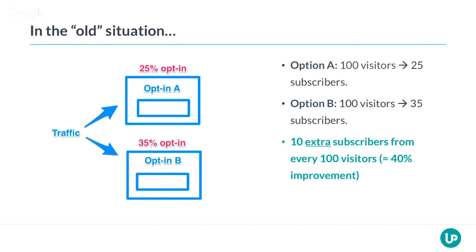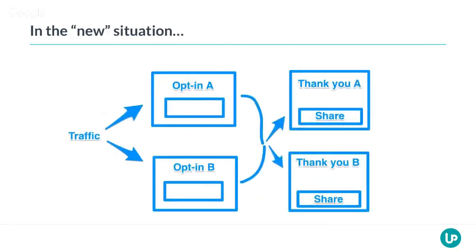What's interesting is that when every person refers on average more than one new person, something magical happens. This has everything to do with the viral coefficient — don't worry, you don't need to understand this in technical detail. What it basically means is: if every person on average refers less than one person, it will not go viral. However, as soon as every person on average refers more than one new person, it will go viral.